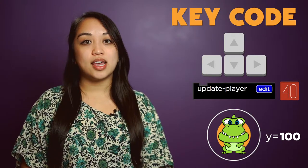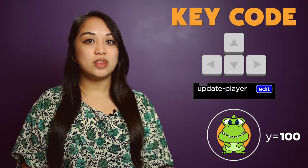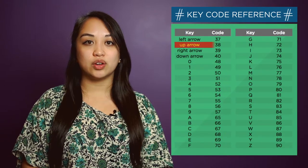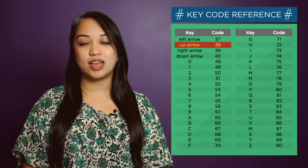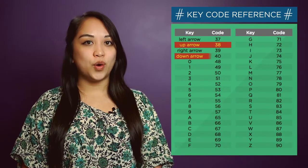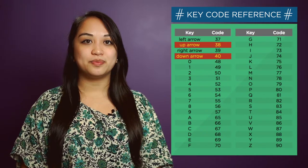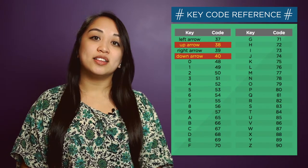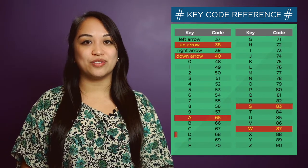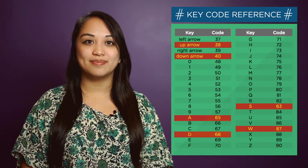If you want to use the arrow keys to move your player, you'll need to check for keycode 38 for the up arrow, and keycode 40 for the down arrow. If you want to use different keys for your game, check the keycode reference sheet in your student workbook.